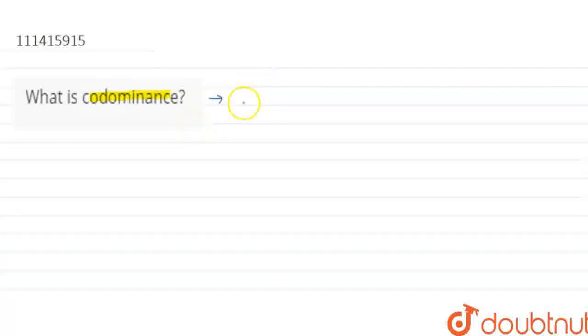So, what happens when both genes of an allelomorphic pair - suppose that we can take a blood group for example, okay?